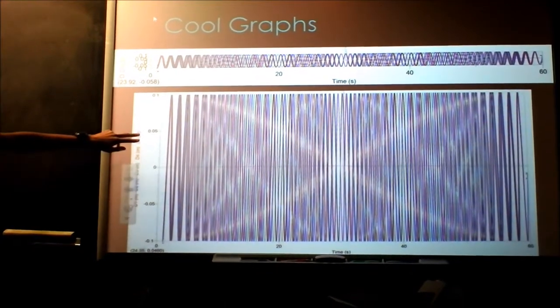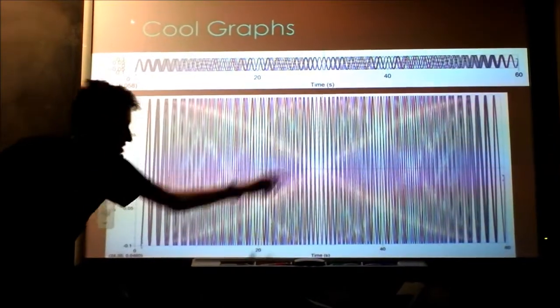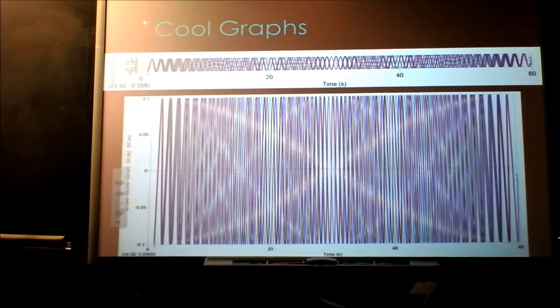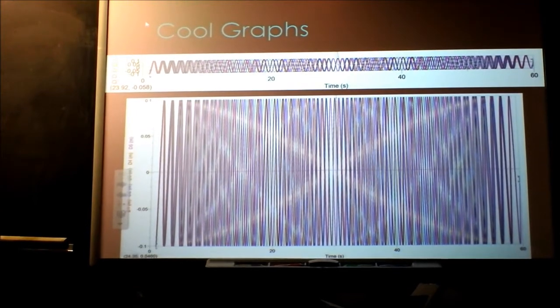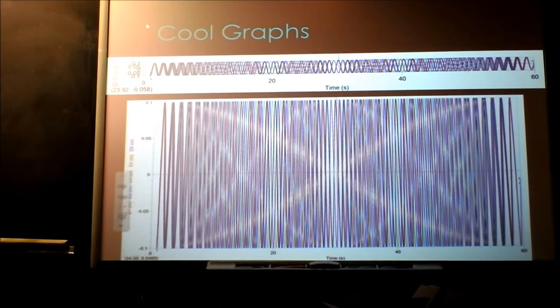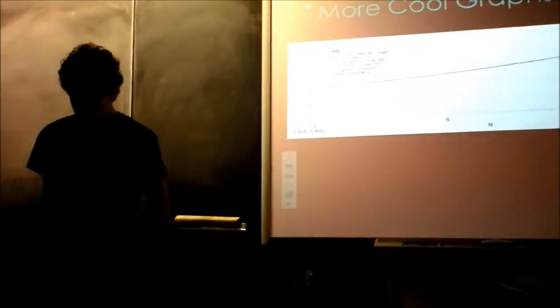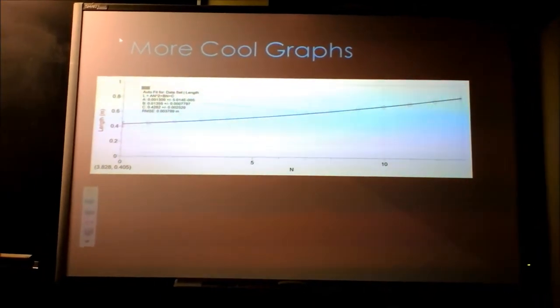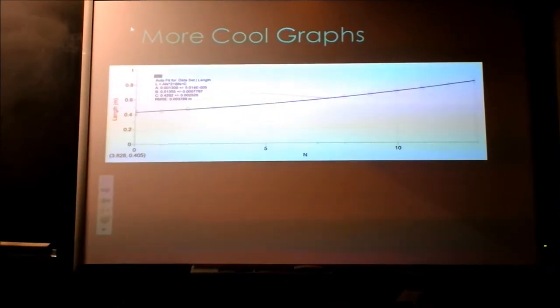And then this is the same graph but stretched out because it has all of that stuff going on in there. That was neat. Here's another graph. This is just the shape of the curve back there, so it's the length versus the number of the ball, and then just some information about that.